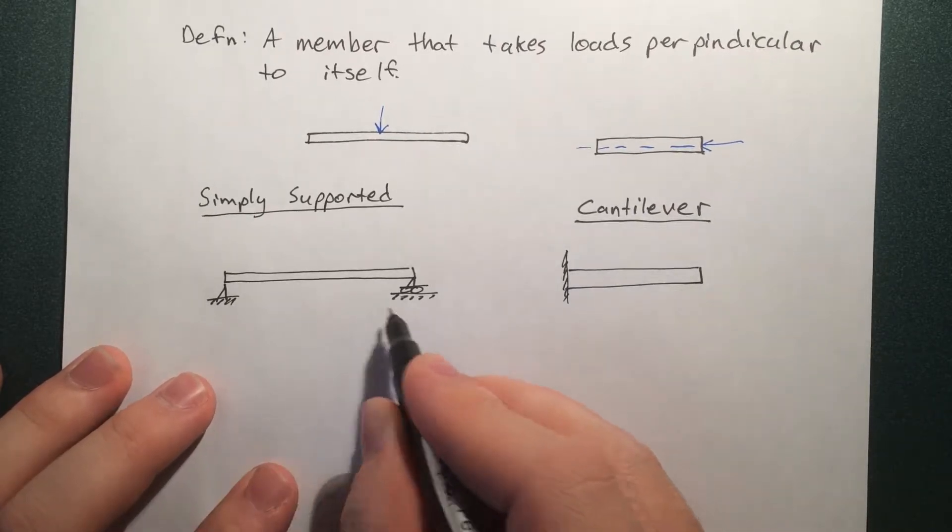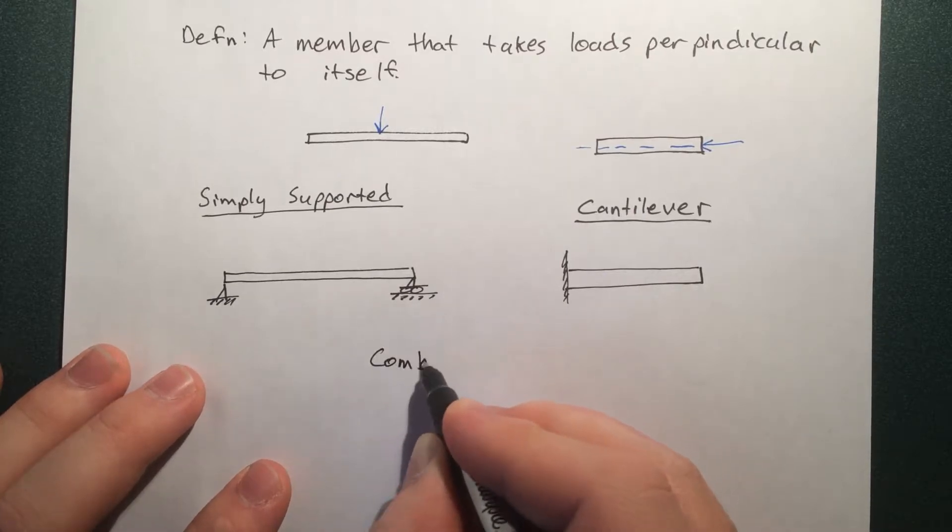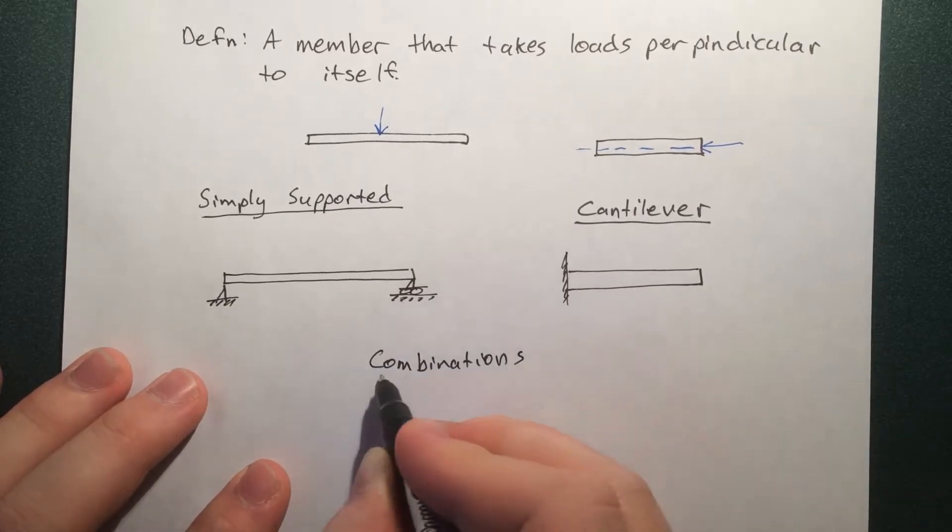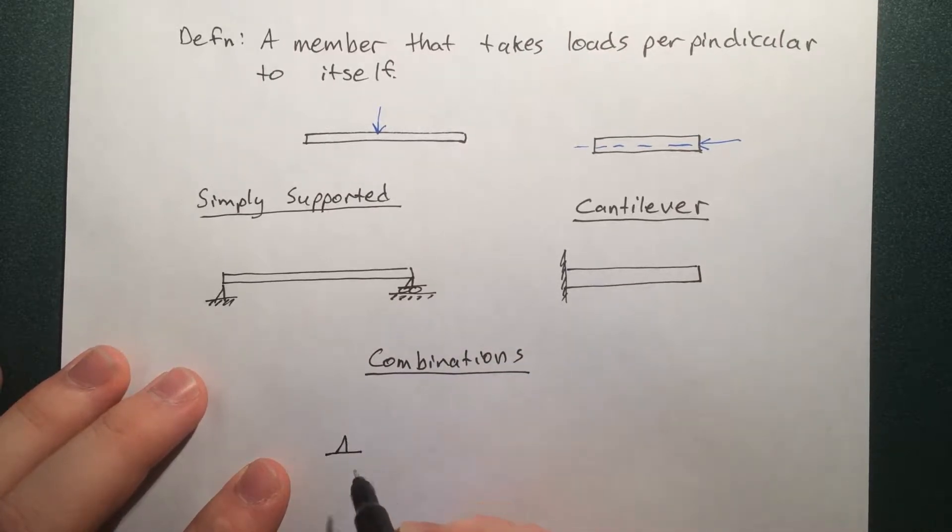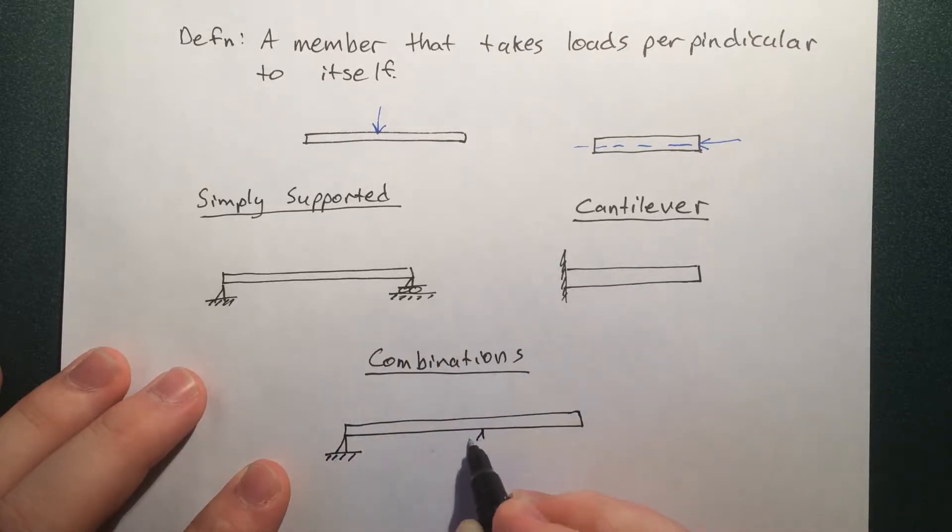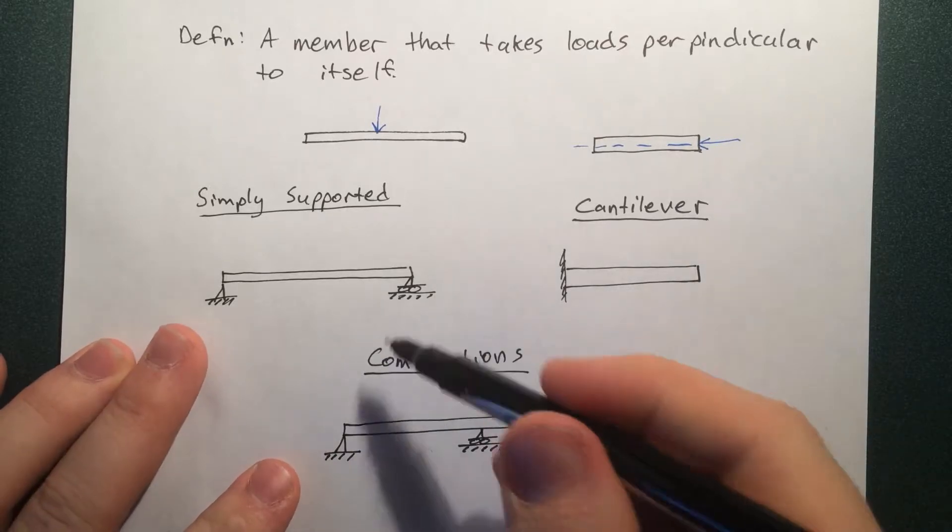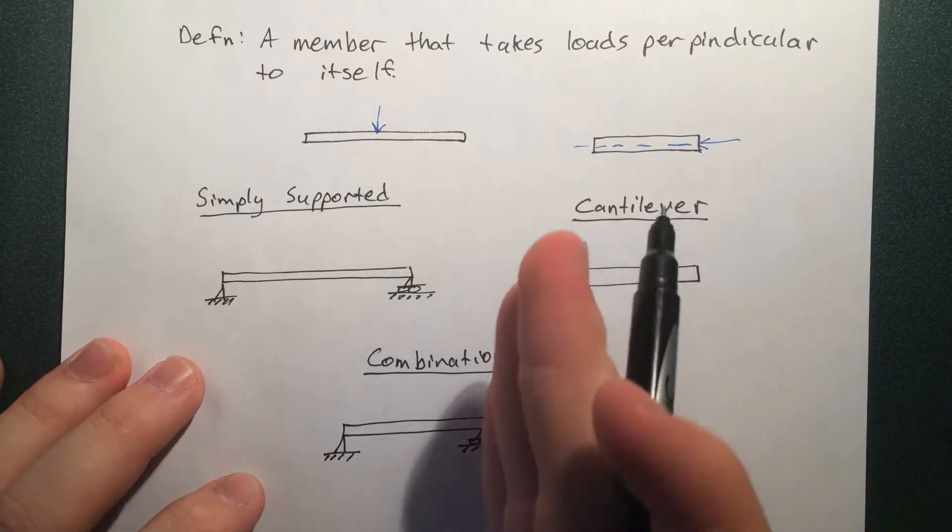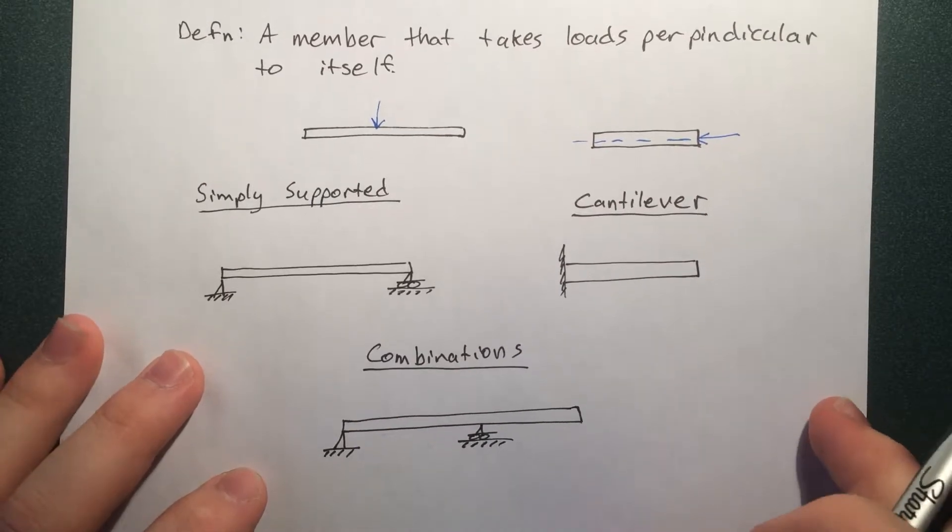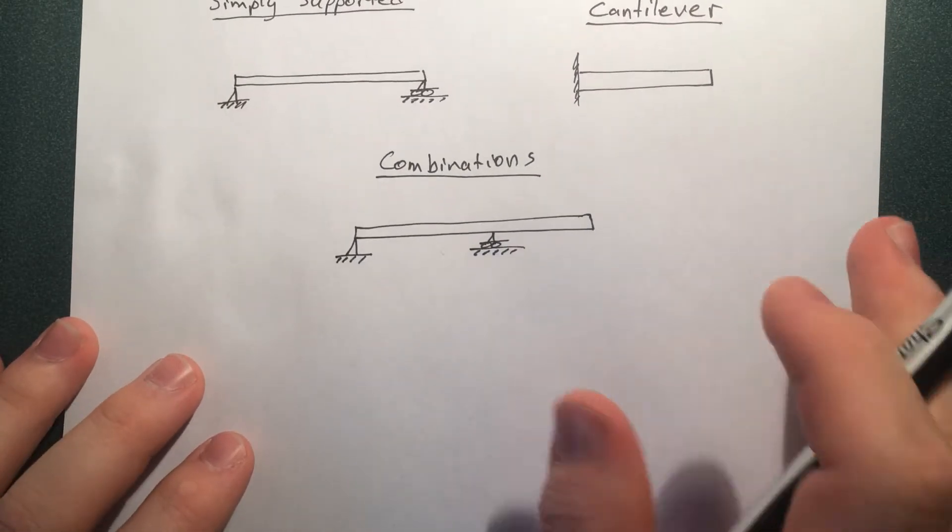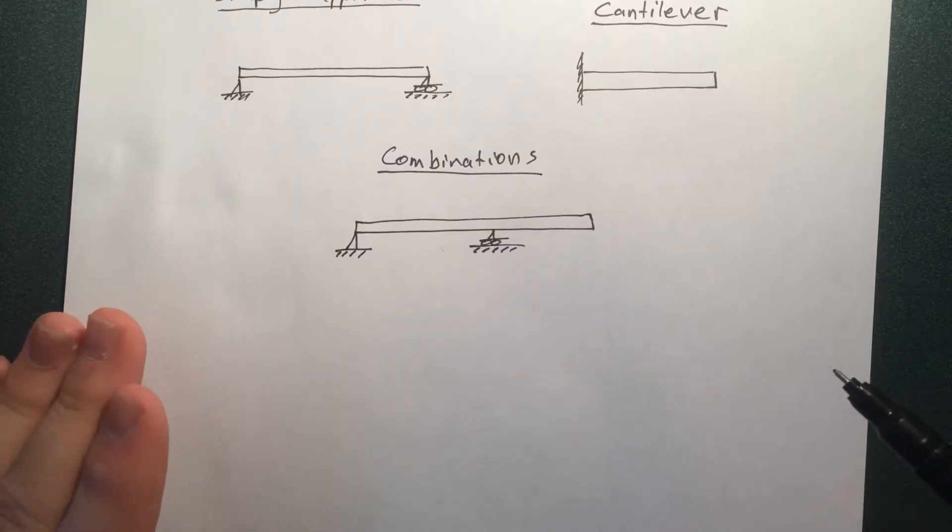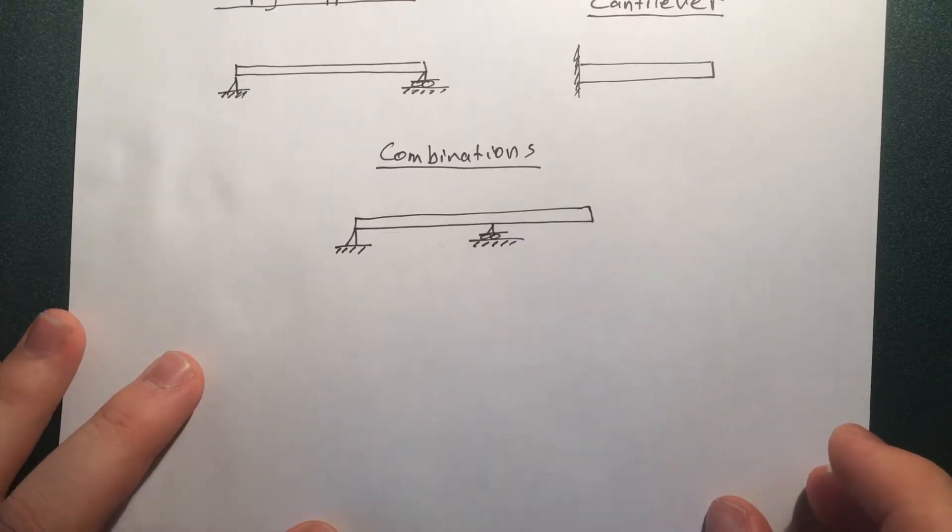And then of course you can have combinations of these two types. So basically this piece is cantilevered over, but this is still being supported here, in a way that you can describe as simply supported if you would just look at this piece. So we're going to look at all these types of beams in this series of videos. If you take further courses into solid mechanics, you'll start looking at more complex beams, but that's a topic for another whole set of videos.